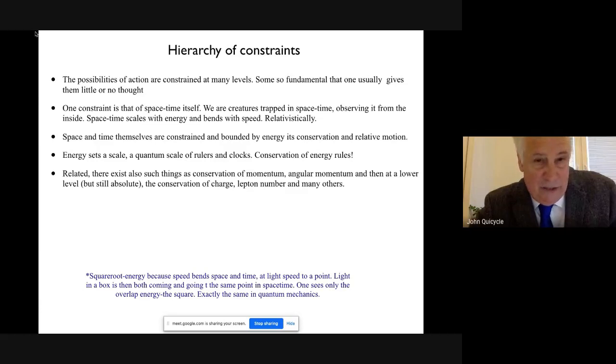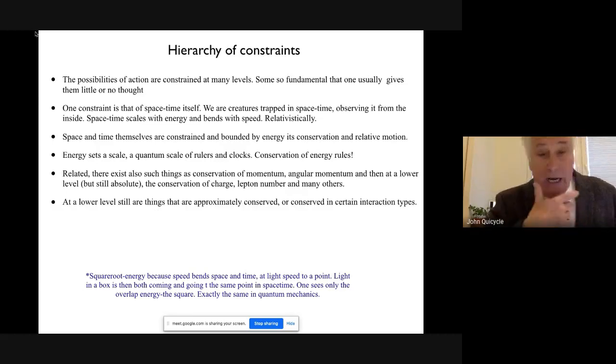There are lower level constraints as well, which we know about, but they're still absolute as far as we know. One of these is the conservation of charge. Why do I say it's low level? Because in the theory I'm going to present, charge comes out rather than having to be put in from some of these other constraints. So it's at a lower level, but it's still an absolute conservation. Other ones - lepton number, for example, the number of electron-like objects is absolutely conserved. So there's a set of these in the standard model which all have to work in any extension of science as we know it.